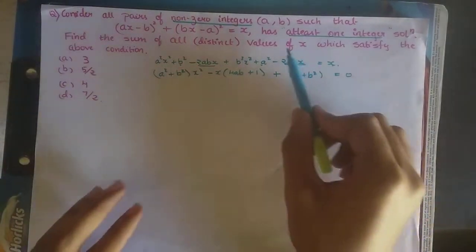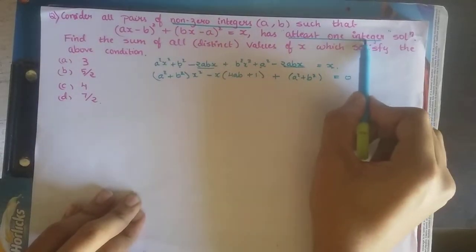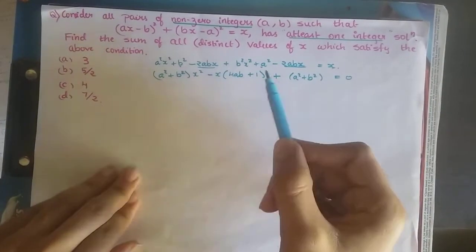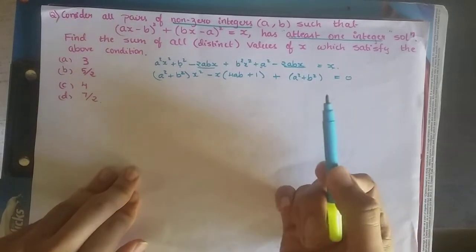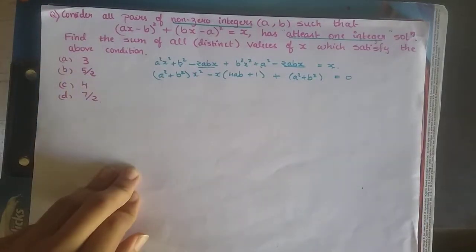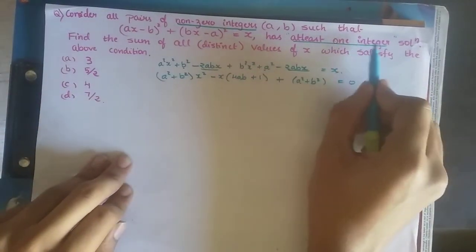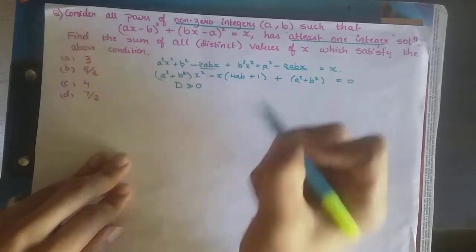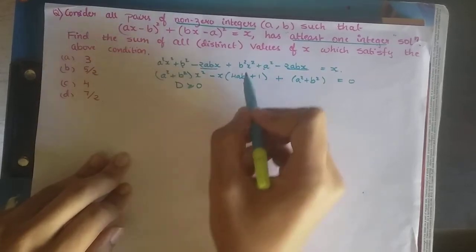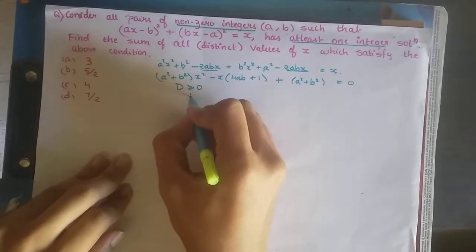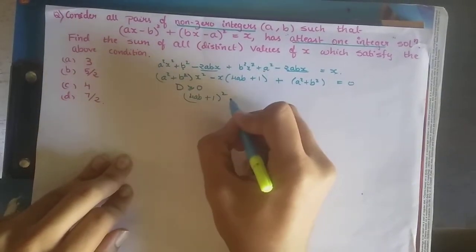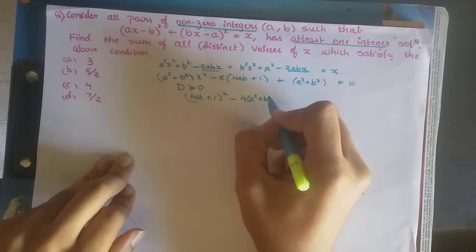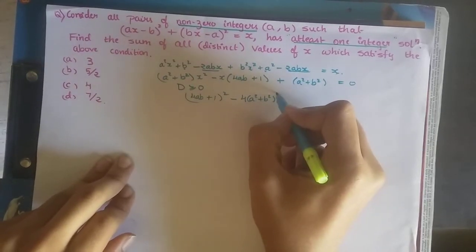They are telling us this equation has at least one integer solution. Since an integer is also a real number, the discriminant must be greater than or equal to 0. So let's find the discriminant D = B² − 4AC = (4ab + 1)² − 4(a² + b²)². This has to be greater than or equal to 0.